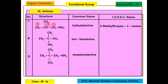Two methyl is written first. If there were no substituent, it would just be propan-1-amine. But since there is methyl on the second carbon, we write methyl first: 2-methylpropan-1-amine.